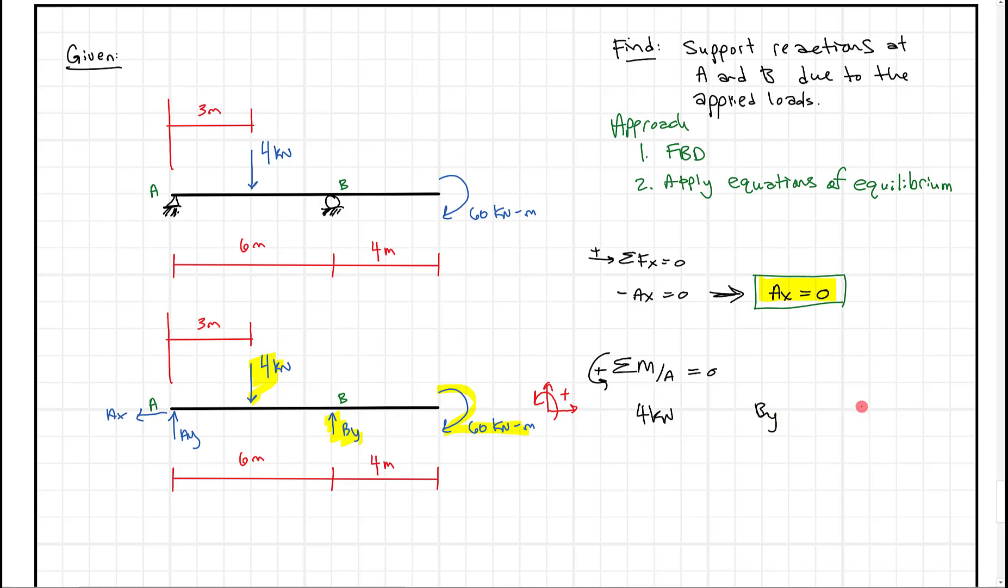So we have four kilonewtons, we have BY, and we have our 60 kilonewton meters. Okay, so next I want to look for moment arms and we know this is all going to need to equal zero. Okay, so let's look for the moment arm for these four kilonewtons. Well, the perpendicular distance between point A and the four kilonewtons is going to be three meters. We're going to multiply this by three meters. That force is tending to cause a clockwise rotation, which is opposite of our positive sign convention. So that's going to be negative.